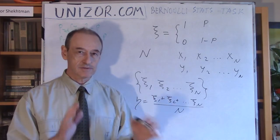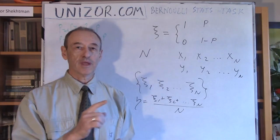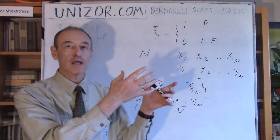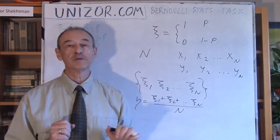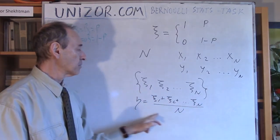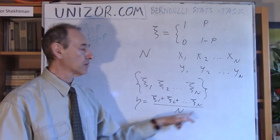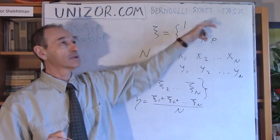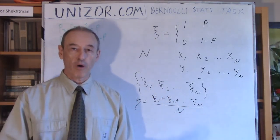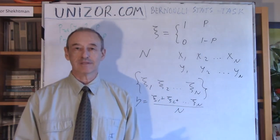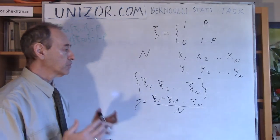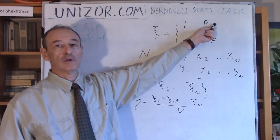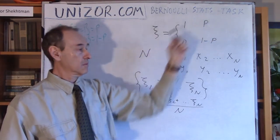Because what we are doing — just think about it once more — we are approximating an unknown constant with a random variable which might take different values. But regardless of the values it takes, it still must be relatively close to our constant p which we would like to evaluate. If we prove that this variable eta, under certain conditions relating to n and some other properties, would be relatively close to p — and we have to define what 'relatively close' means — then the whole approach works, and mathematical statistics as a subject makes sense. So I would like again to formulate the task: I would like to prove that under certain conditions, this particular random variable will be close to the constant which we don't really know. That's the task.